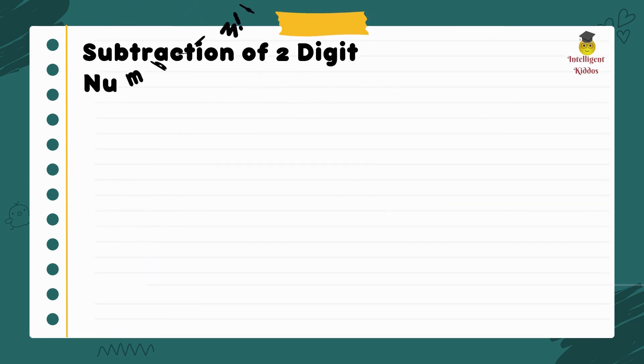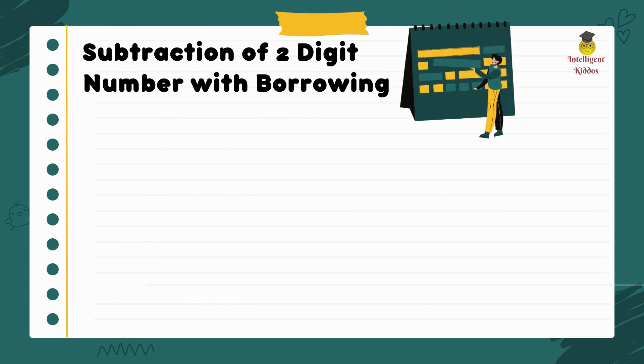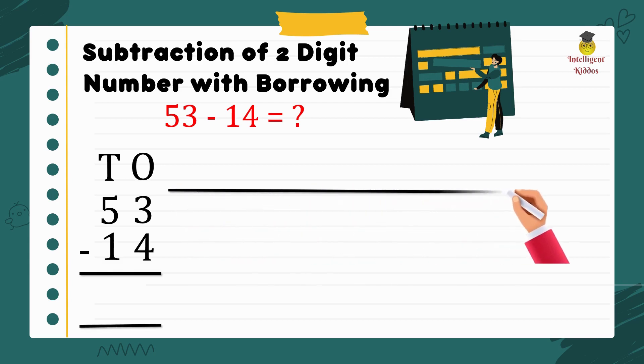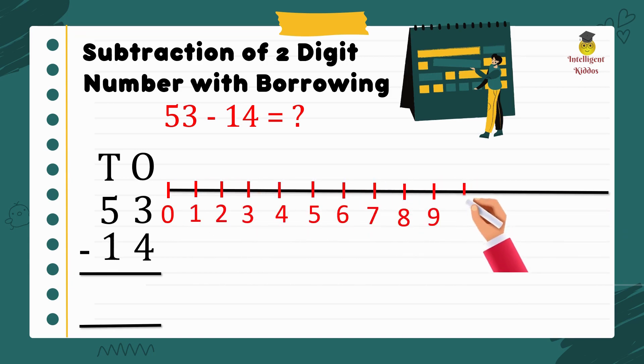Subtraction of two-digit number with borrowing. What is borrowing? Let's see. 53 minus 14. Place according to the tens and ones position and draw a number line. Kids, 3 minus 4, is this possible? 3 is a smaller number, so what we have to do?